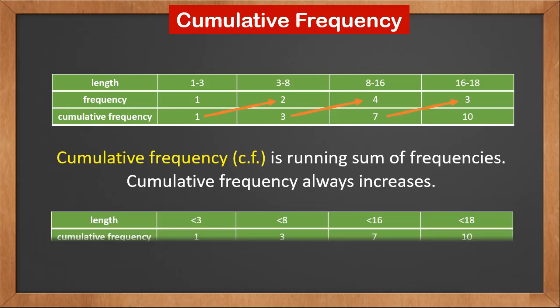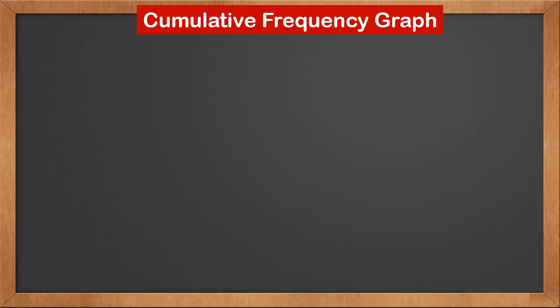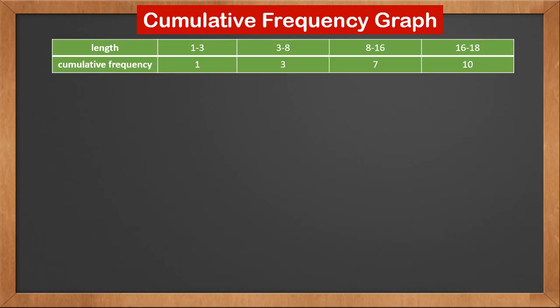What does cumulative frequency mean? It means 1 value is less than 3, 3 values are less than 8, 7 values are less than 16, and 10 values are less than 18.